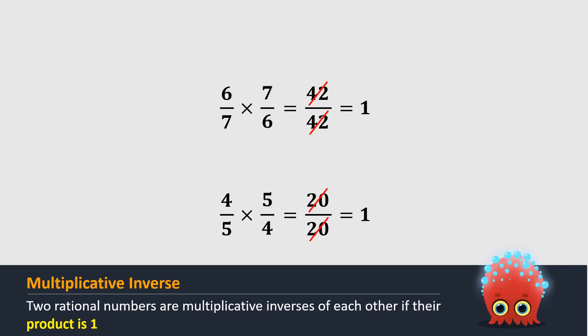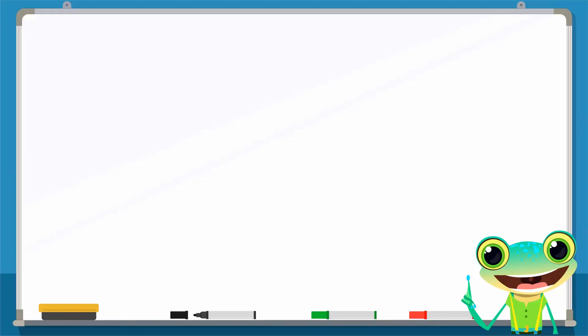Another name for the multiplicative inverse is the reciprocal. For instance, the multiplicative inverse or reciprocal of 5 over 2 is 2 over 5, since their product is 1.